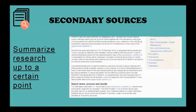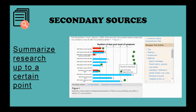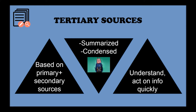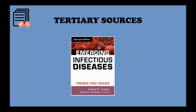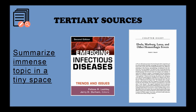This particular example reviews all the published literature on sexual transmission of the Ebola virus up to the point it was published. Tertiary sources are made up of both primary and secondary source material. They present data and information by summarizing and condensing it so that it's easy to interpret and understand. One example of a tertiary source is something like this textbook on emerging infectious diseases. It has a chapter that talks about Ebola, but it's summarized — it condenses an immense topic in a relatively small space so that it's easy to consume and understand.